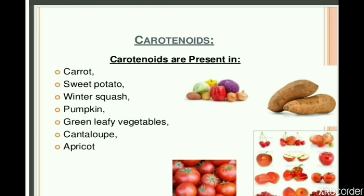Now we see the carotenoids. Carotenoids are yellow, orange, and red organic pigments produced by plants, algae, bacteria, and fungi. Carotenoids give the characteristic color to pumpkins, carrots, corn, and tomatoes. Carotenoids serve two key roles in plants and algae: they absorb light energy to use in photosynthesis, and they provide photoprotection via non-photochemical quenching.